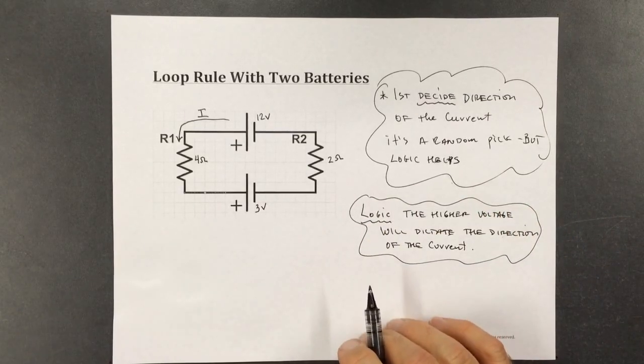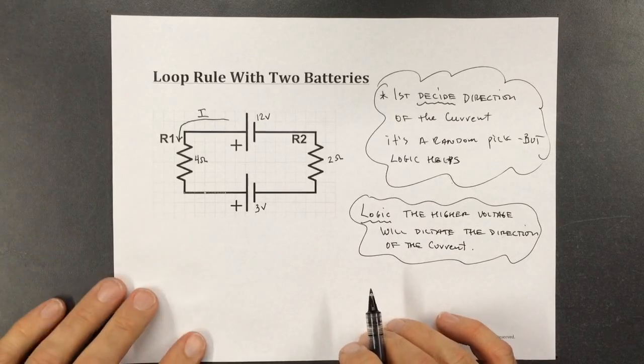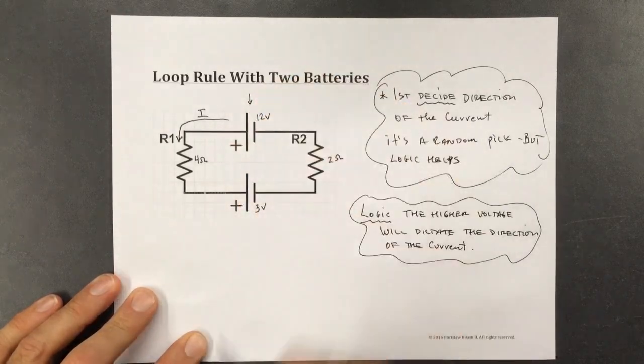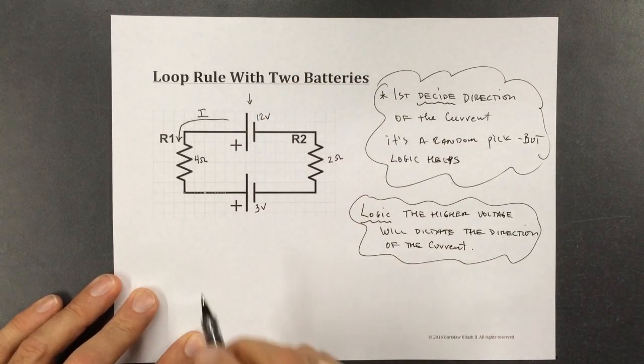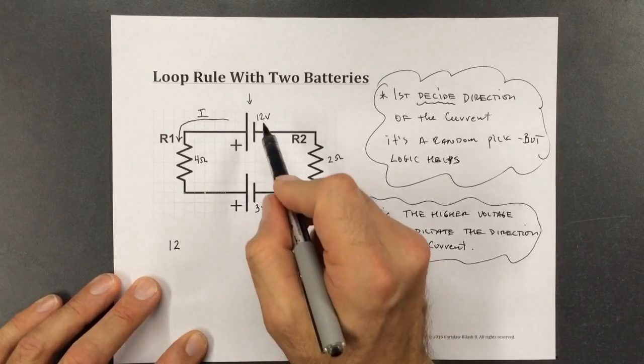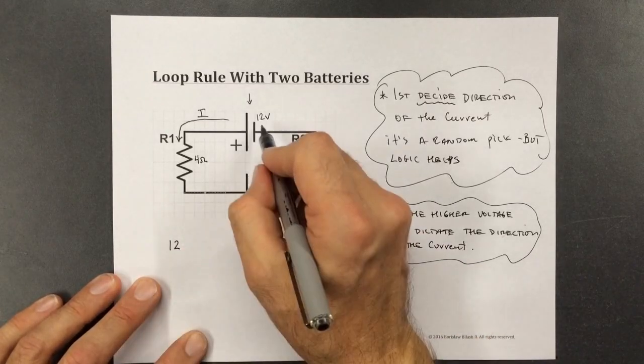Good. So let's start applying Kirchhoff's loop rule. So I'm going to begin right here. You can begin anywhere, it doesn't really matter. But I'll begin with what I'm considering the first voltage source, 12.